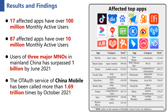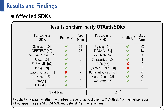According to the statistics of China Internet Network Information Center, the total number of mobile Internet users in mainland China surpassed 1 billion by June 2021, and nearly all of them use services provided by the three major MNOs. China Mobile claimed its One-Type Authentication service has been called more than 1.69 trillion times by October 2021. Thus, we believe more than 1 billion users are potentially affected by these vulnerabilities. Among the 19 third-party SDKs investigated, eight are found in our app dataset, and since the root cause is the insecure design of the authentication scheme, all these third-party SDKs are vulnerable to the simulation attack.